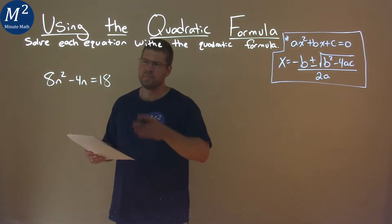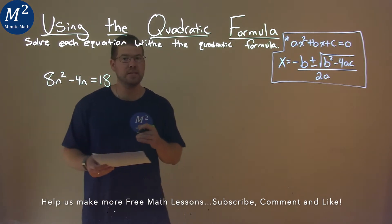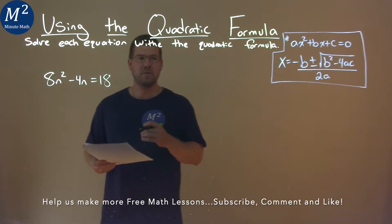We're given this problem right here: 8n squared minus 4n equals 18, and we need to solve this using the quadratic formula.